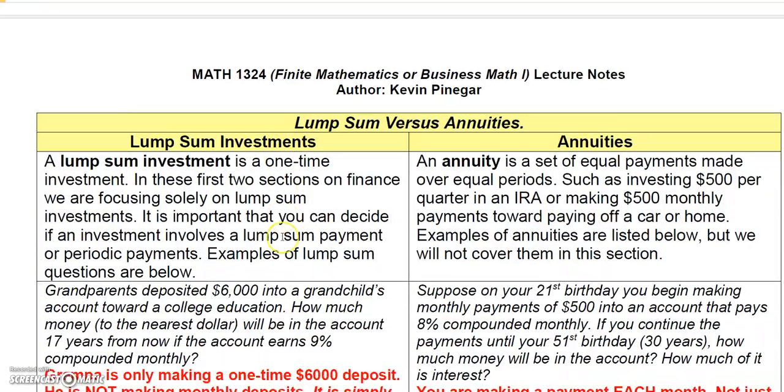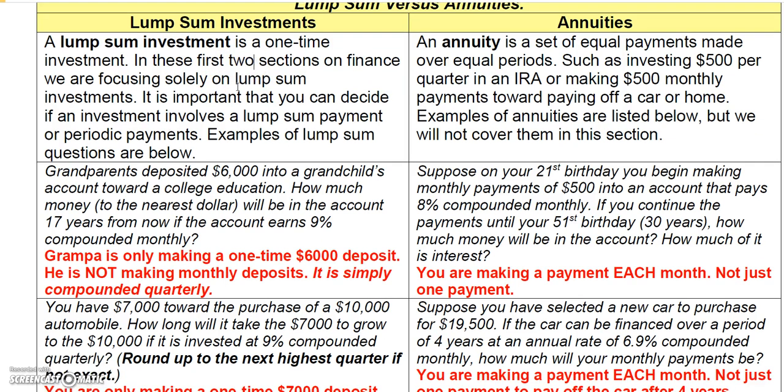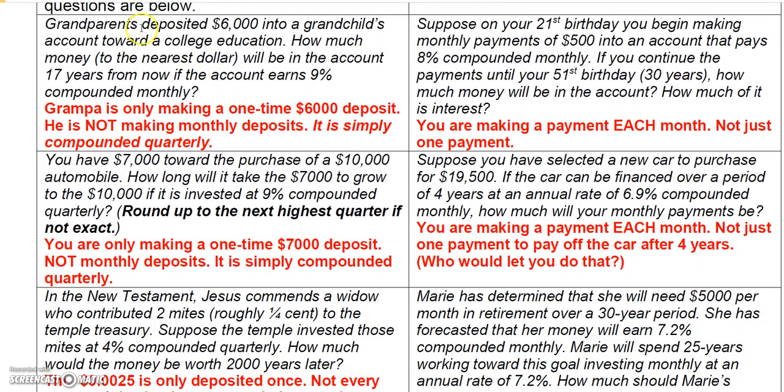Let's look at the difference between lump sums versus an annuity. It's important to understand that a lump sum investment is a one-time investment, and an annuity is a set of equal payments. For example, if grandparents deposited $6,000 into a grandchild's account, that's a lump sum deposit. But if you're making monthly payments of $500 over a 30-year period, that would be an annuity.